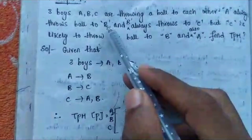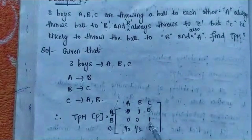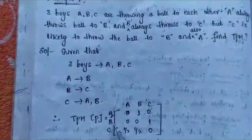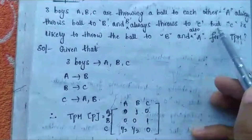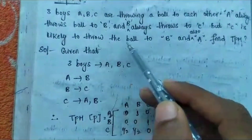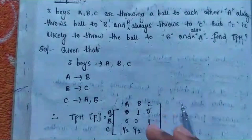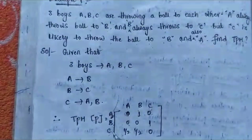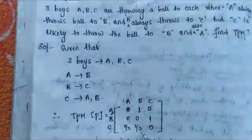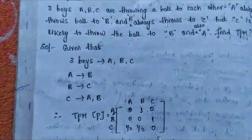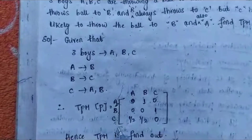C is equally likely to throw the ball to either B or A — that is, C throws to 2 members. Therefore, C→A = 1/2 and C→B = 1/2, and C→C = 0 since C does not throw to itself. The TPM is thus fully determined as a 3×3 matrix with rows [0,1,0], [0,0,1], [1/2,1/2,0].